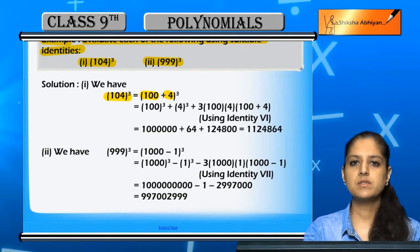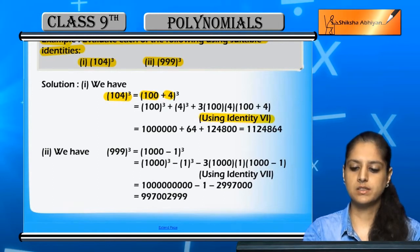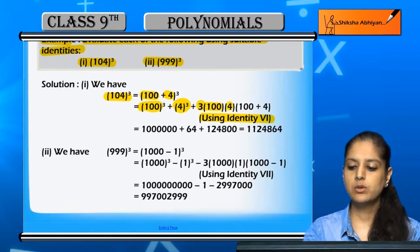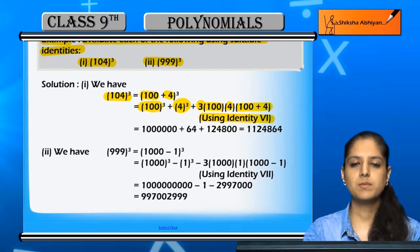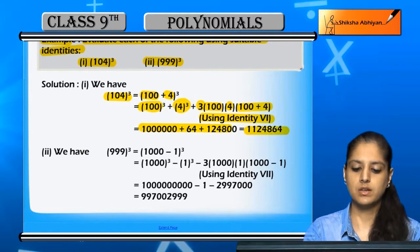This is x plus y whole cube, which is the sixth identity. So we have 100³ + 4³ + 3 times 100 times 4 times (100 + 4). Solving this further gives us the answer: 1000000 + 64 + 124800 = 1124864.